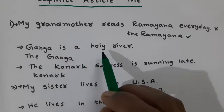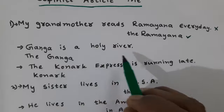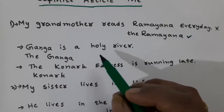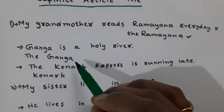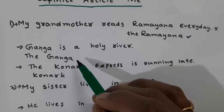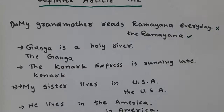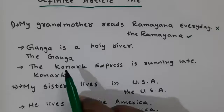Next example: 'Ganga is a holy river' versus 'The Ganga is a holy river.' Which is correct? 'The Ganga' is the correct answer. Before the names of rivers, seas, oceans, mountain ranges, channels, lakes, gulfs, plateaus, holy books, express trains, newspapers, aeroplanes, rockets, and ships, we use the definite article 'the'.